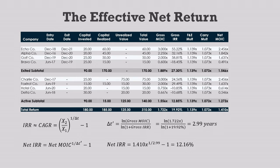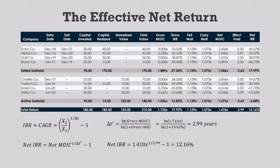The great thing about this approach is that the columns on the standard gross return table give us everything we need to calculate our net IRRs. The 11 gross multiples and 11 gross IRRs give us 11 effective holds, and we can apply these to the 11 net multiples to calculate 11 net IRRs. These numbers are very close to those calculated in the last video, and we got them without ever touching a cash flow spreadsheet.